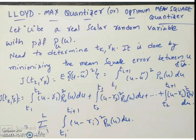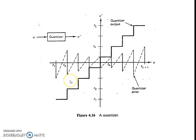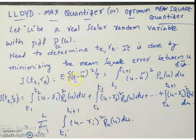You can consider other objective functions as well, such as the modulus of u minus u tilde. But the Lloyd-Max quantizer considers the expectation of (u minus u tilde) squared — the mean square error between u and u tilde. This is the objective function. We are trying to find the values of tk and rk for a given variable u, where u is a real scalar random variable with probability density function pu(u).